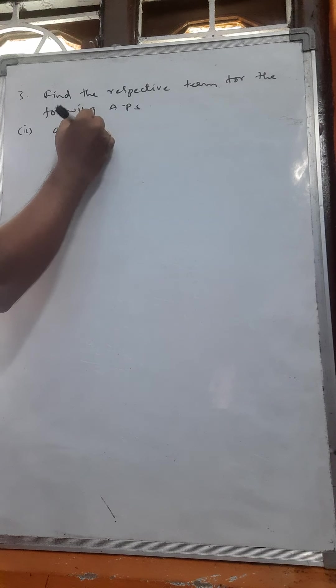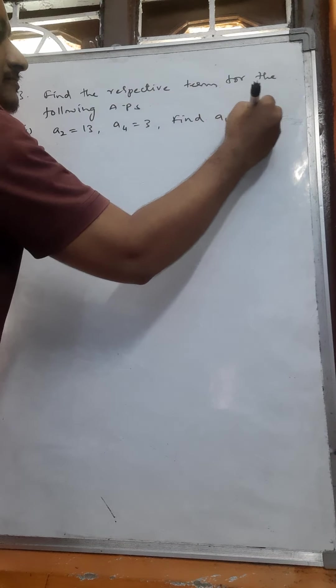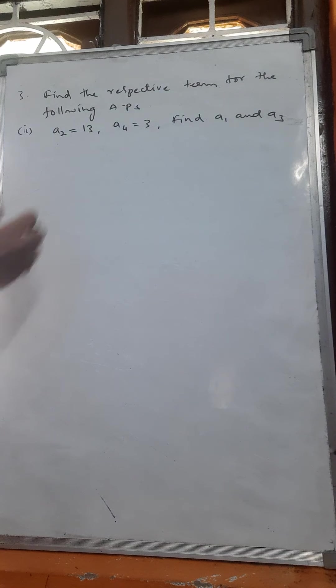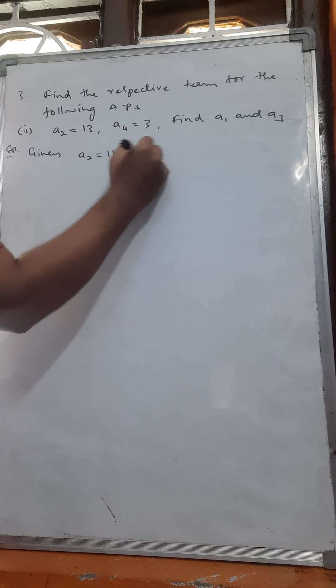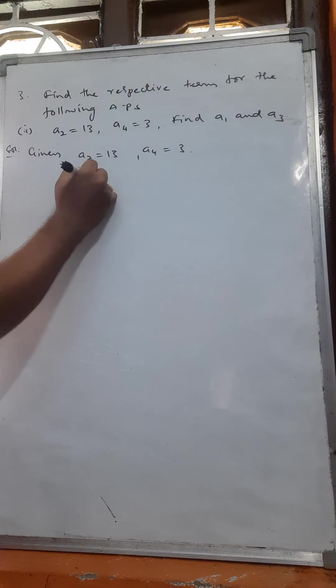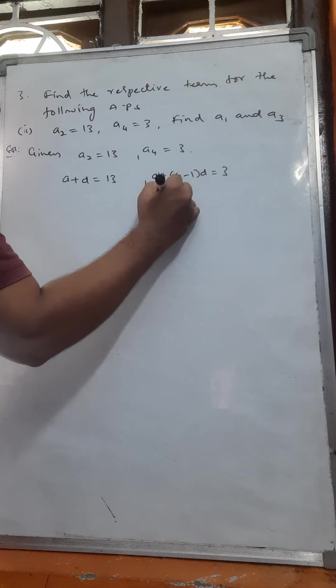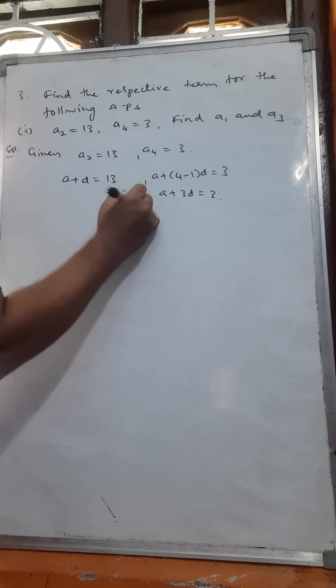Second problem: a2 is equal to 13, a4 is equal to 3. Given a2 is equal to 13, a4 means the fourth term. Fourth term means a plus 4 minus 1 into d is equal to 3, so that is a plus 3d is equal to 3 — equation number 1. a2 gives a plus d is equal to 13 — equation number 2.